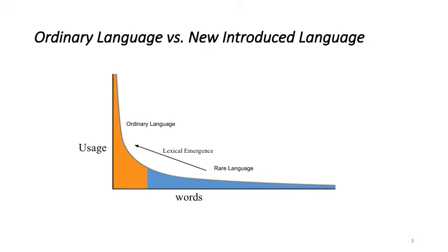First let's see how ordinary language is different to new introduced language. Looking at word usage distribution, the tail of the distribution is the language that we rarely use in our daily language and the head of this distribution is our everyday language, the ordinary language. If a term moves from the rare language to ordinary language it will be considered as lexical emergence or new introduced language. While binary models are good for lexical emergence they are not presented to capture change in usage frequency. So frequency based models are needed for ordinary language study.